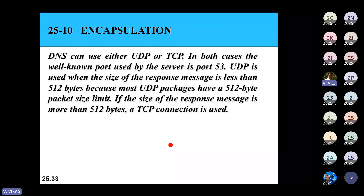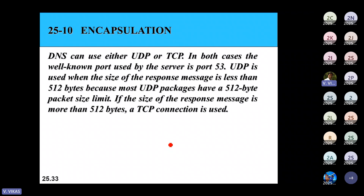DNS messages can use either UDP or TCP, and the well-known port is 53. UDP is used when the response message is less than 512 bytes, since most UDP packets have a 512-byte size limit. DNS queries and responses are typically short request-response messages, suitable for UDP. When a response is greater than 512 bytes, TCP must be used since UDP doesn't provide reliable service.